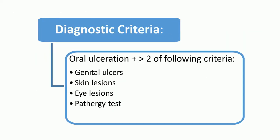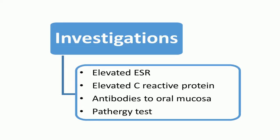Diagnostic criteria: diagnosis is almost certain if, in addition to oral ulceration, any two of the following criteria are present: 1) genital ulcers, 2) skin lesions, 3) eye lesions, and 4) pathurgi test. Investigations will show elevated erythrocyte sedimentation rate, elevated C-reactive protein, antibodies to oral mucosa, and pathurgi test showing abnormal inflammatory response to scratch or intradermal saline administration, which is not seen in normal individuals.